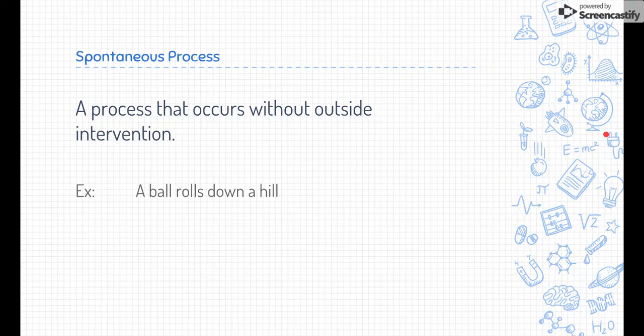This example is a ball that rolls down a hill. If you have a ball that's sitting on a hill, quite naturally, it's going to roll down the hill. Gravity pulls it down naturally, or we say it's spontaneous.